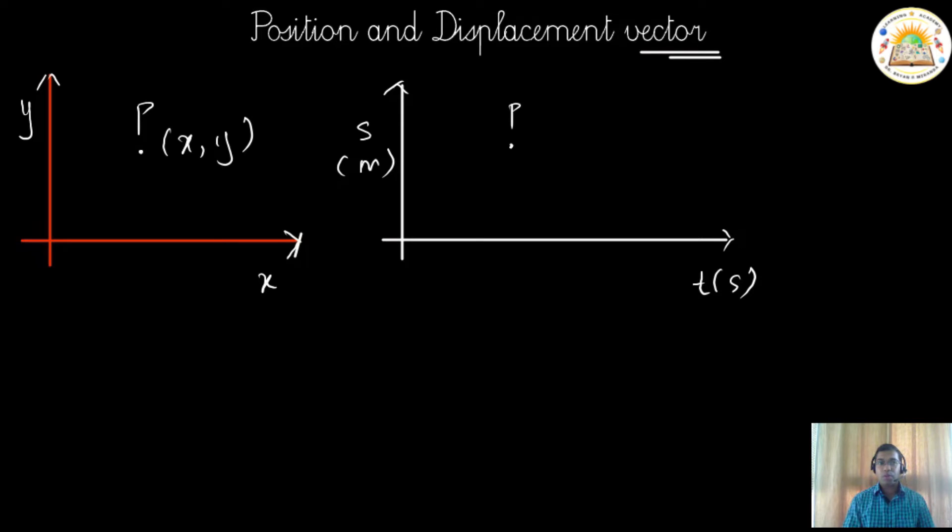Now comes the question, how do you show it in the form of a vector? What is it that we call a vector? In words, we've seen what is a scalar, what is a vector. But how do you actually represent a vector? It is very simple. We draw a straight line and we put an arrow. This is how you represent a vector.